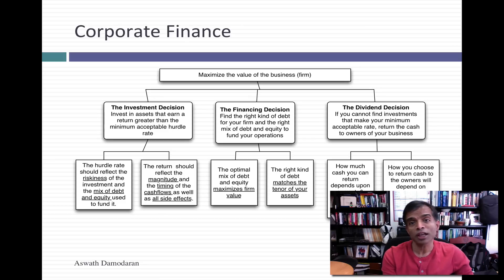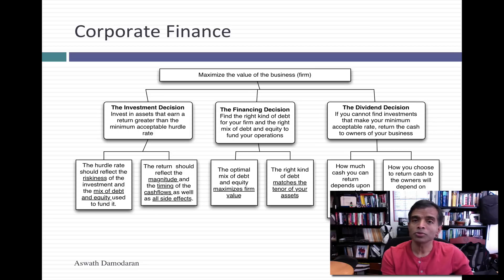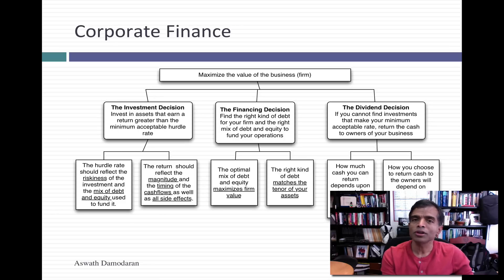The third big decision is how much cash you can take out of the business — the dividend decision. That decision gets a little more complicated for public companies, where you have to decide whether to pay dividends or buy back stock, but it's still the return of cash. And in doing all of this, you have a singular objective in corporate finance, which is to make your business the most valuable business you can.